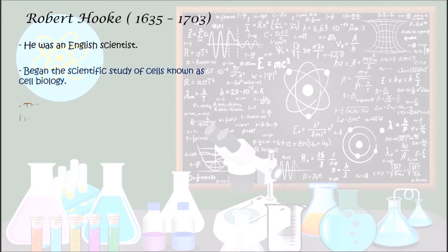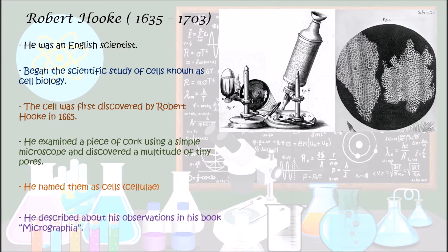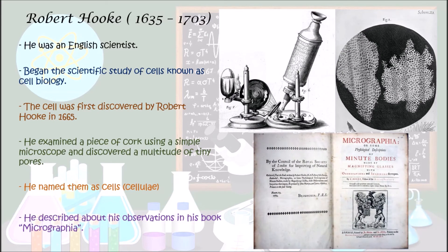Robert Hooke was an English scientist who began the scientific study of cells, known as cell biology. The cell was first discovered by Robert Hooke in 1665. He examined a piece of cork using a simple microscope and discovered a multitude of tiny pores. He named these cells — the meaning of cell being 'cellular', that is the six-sided cell of a honeycomb.